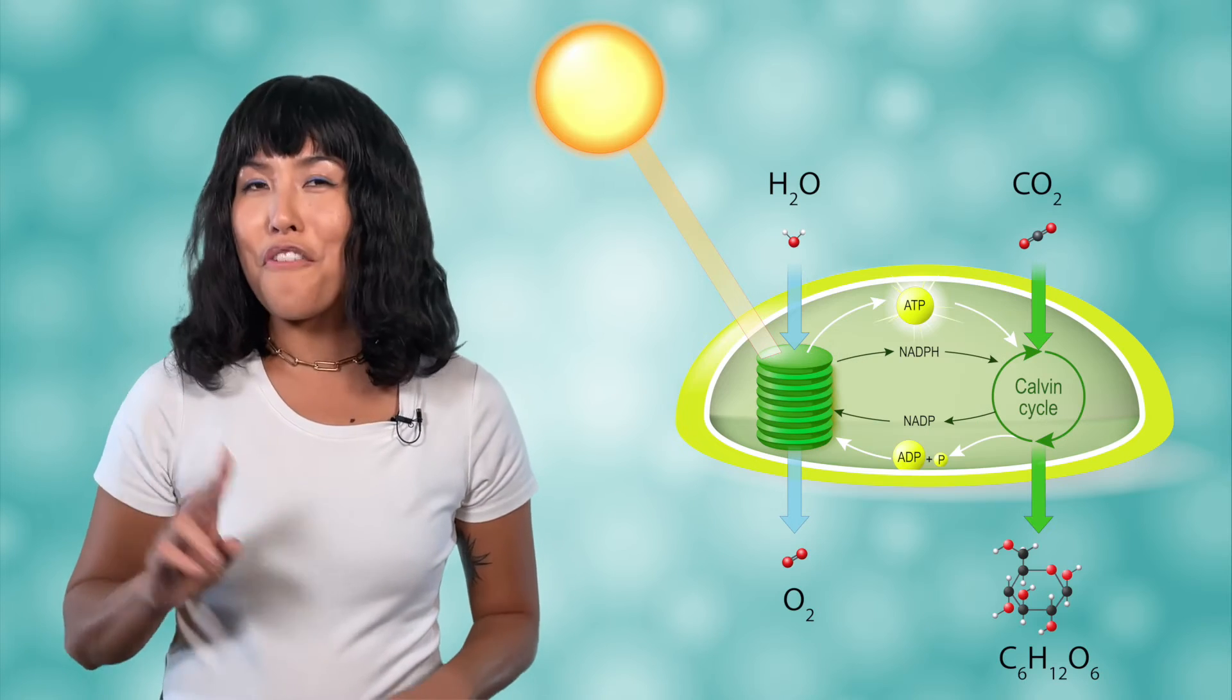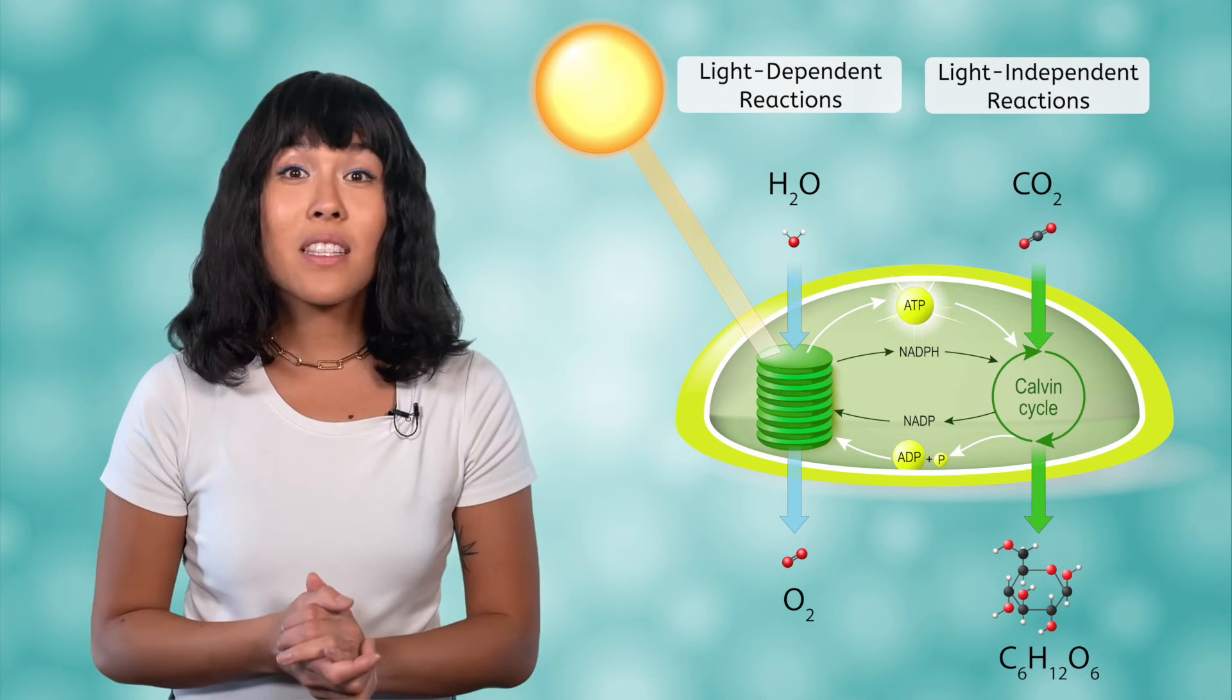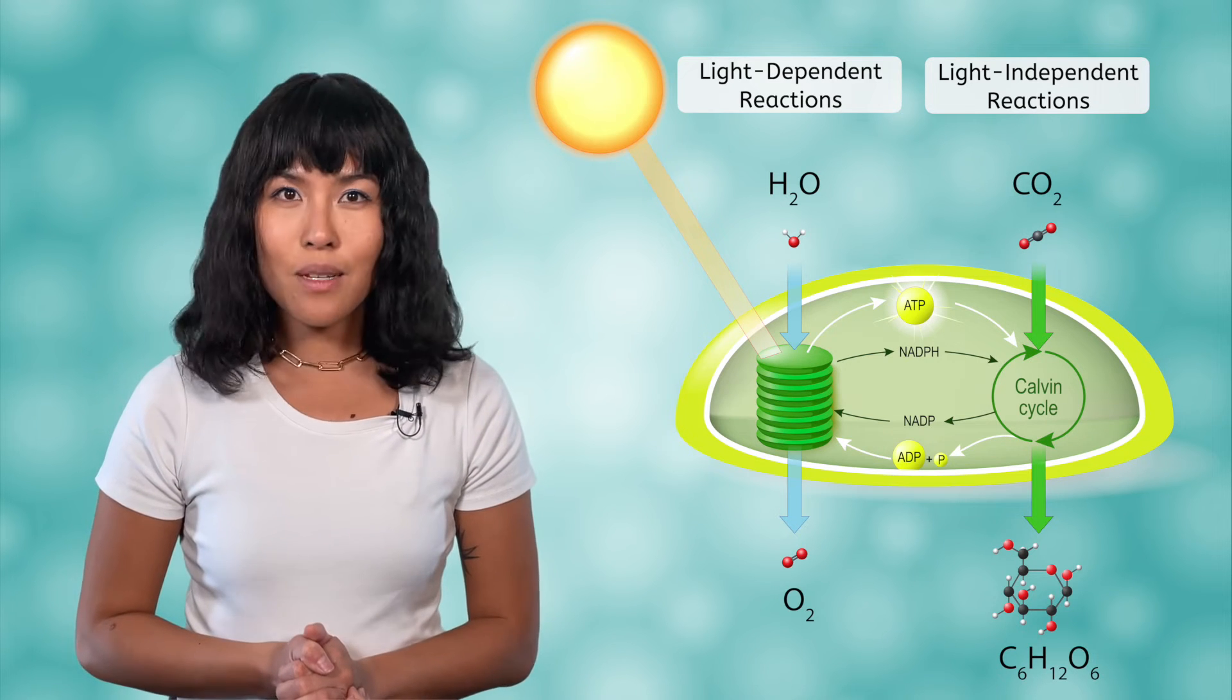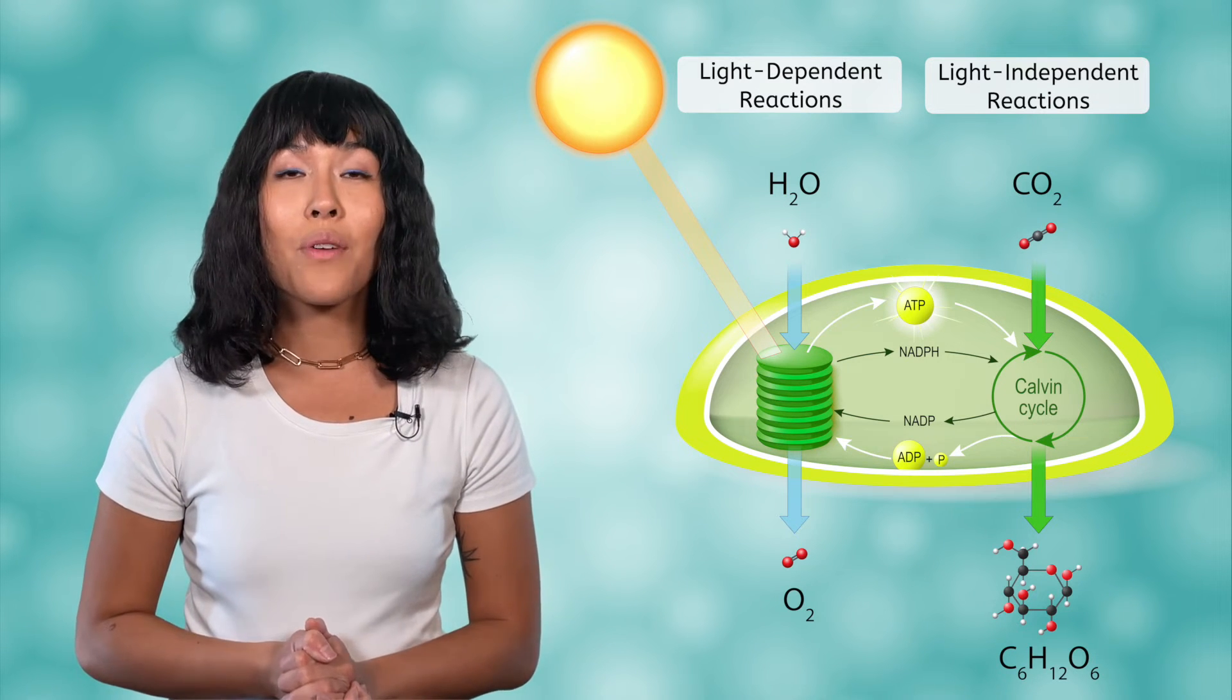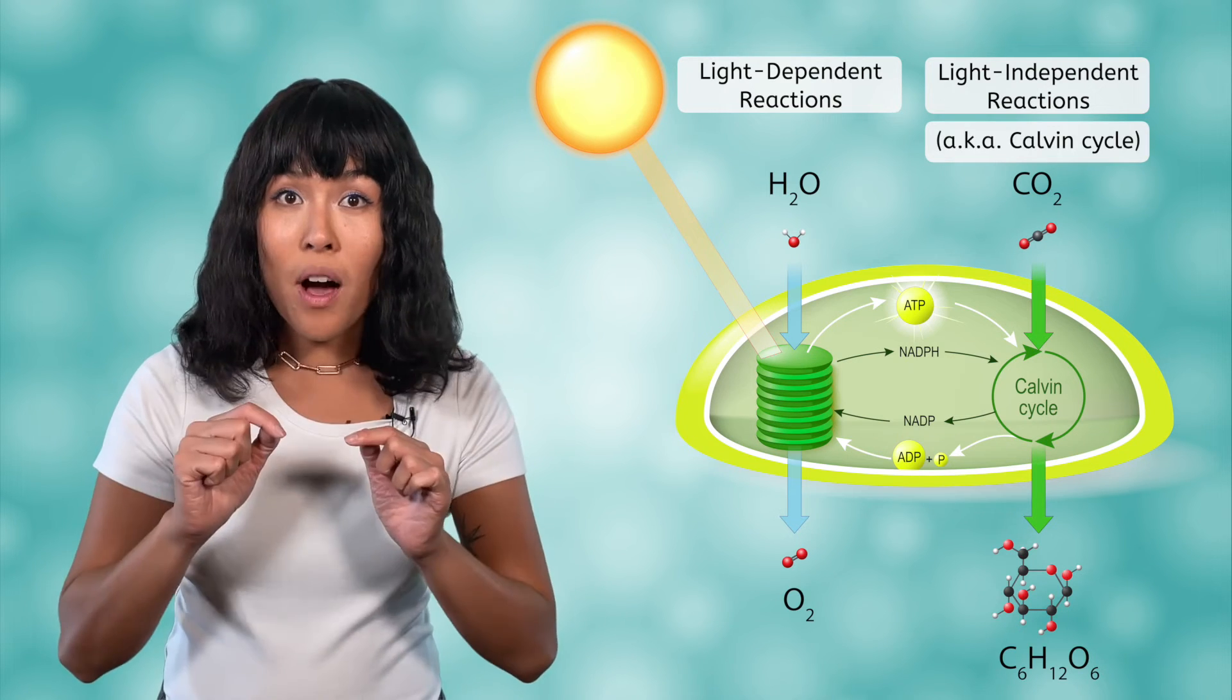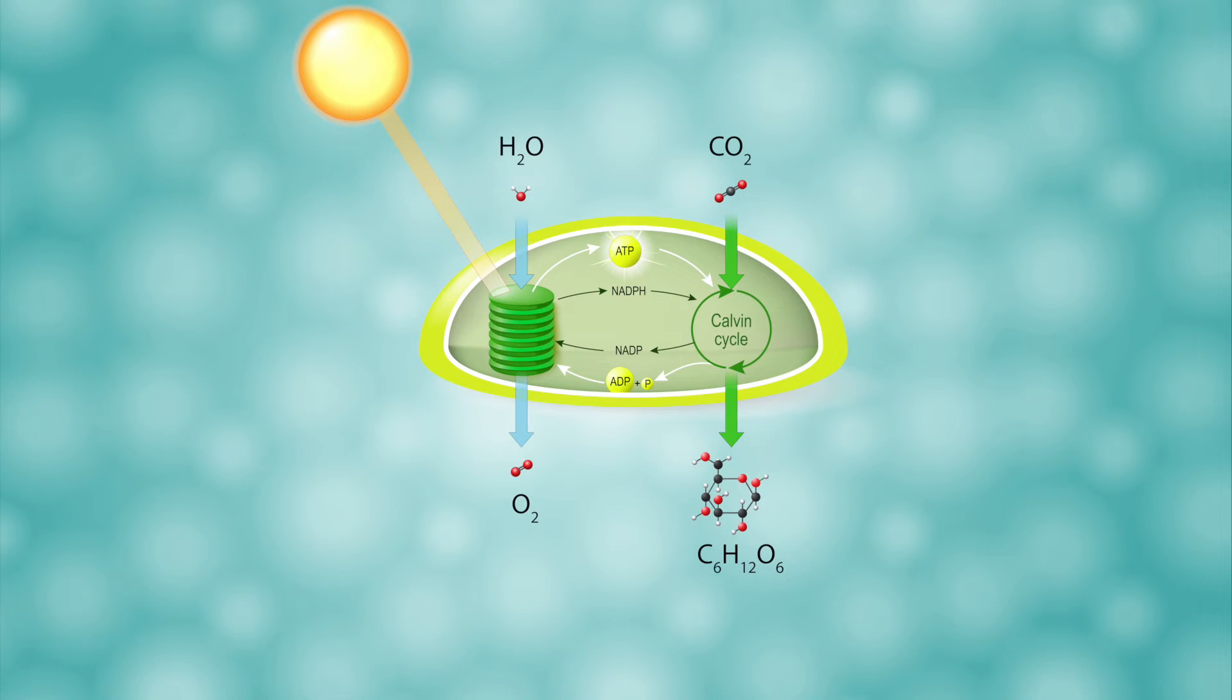The second stage of photosynthesis is called the light-independent reactions, because they do not directly depend on light like the first stage does. The light-independent reactions are also known as the Calvin cycle. These reactions take place in the stroma of the chloroplast, outside the thylakoid. Through several reaction steps involving enzymes and other molecules, the carbon atoms from multiple CO2 molecules are linked together, along with hydrogen and oxygen atoms to form glucose.